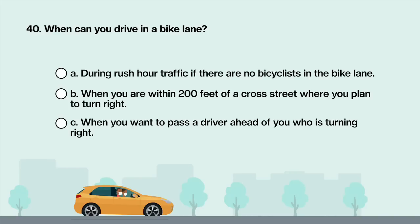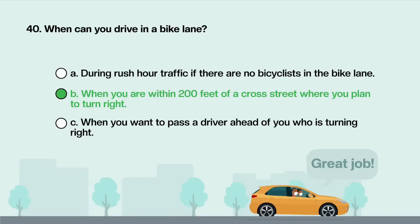When can you drive in a bike lane? A. During rush hour traffic if there are no bicyclists in the bike lane. B. When you are within 200 feet of a cross street where you plan to turn right. C. When you want to pass a driver ahead of you who is turning right. Answer is B: When you are within 200 feet of a cross street where you plan to turn right.